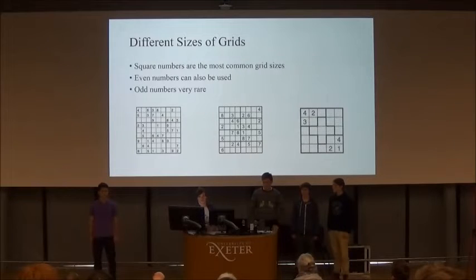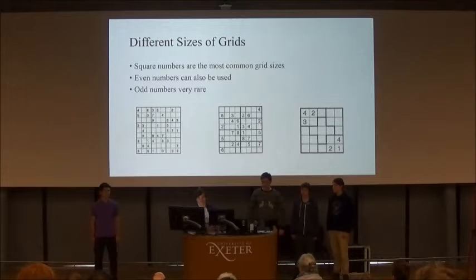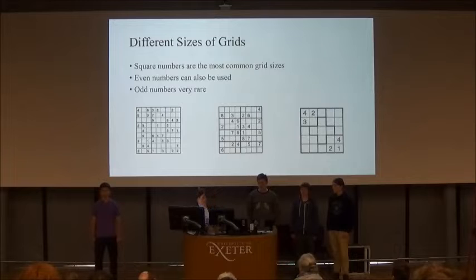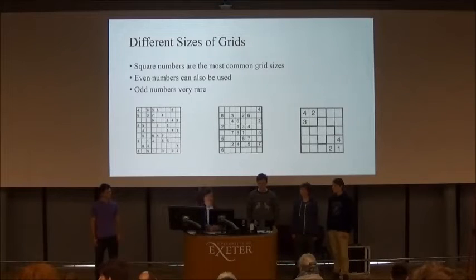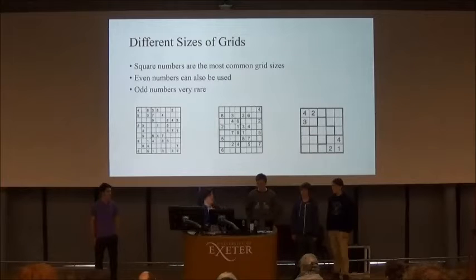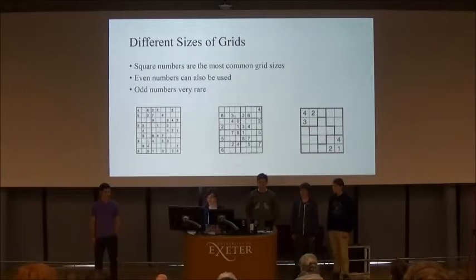You all know the regular 9x9 Sudoku grid, which is an example of a squared-number Sudoku grid. These can come in 4x4, 16x16, or 9x9. But you can also get even-number Sudoku grids, like the 8x8, which is arranged in a rectangular format, such as 4x2 or 6x2 region layouts.